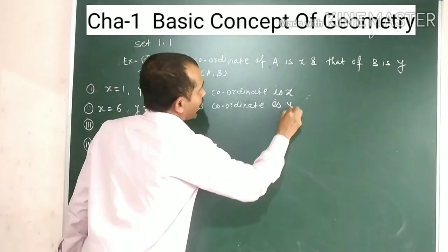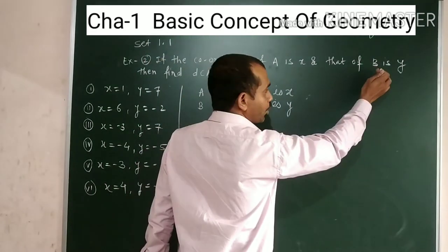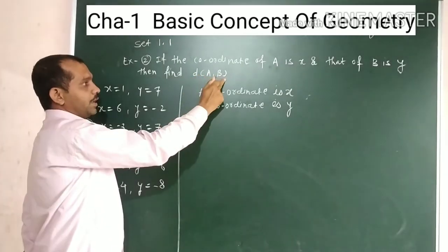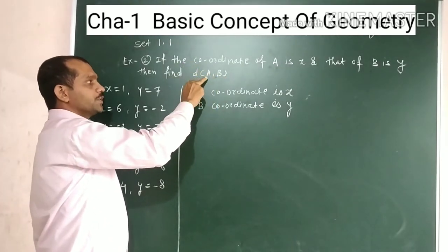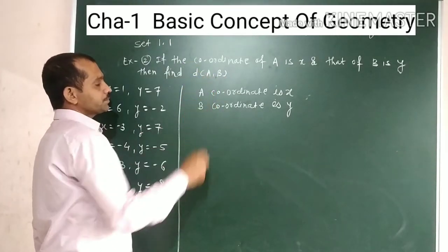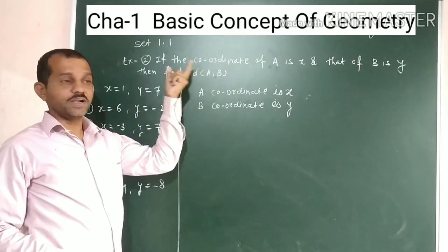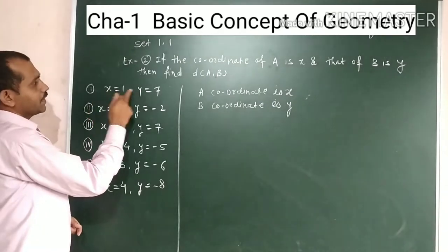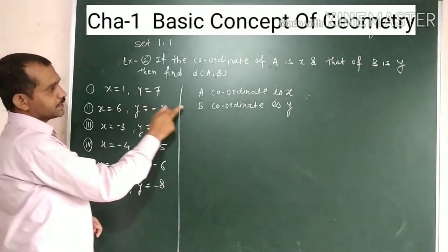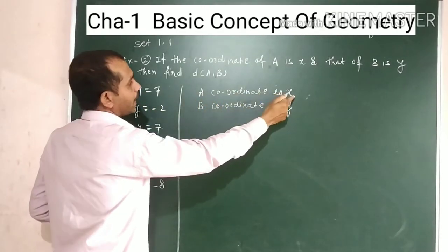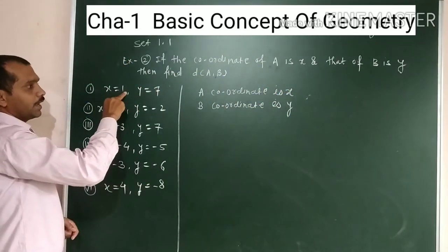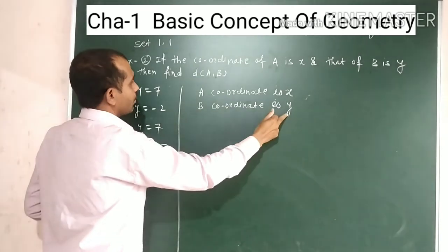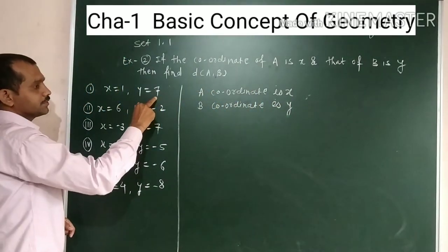The coordinates are x and y. Point B is y. Then find the distance between points A and B. We have the x value for A and the y value for B in this example.